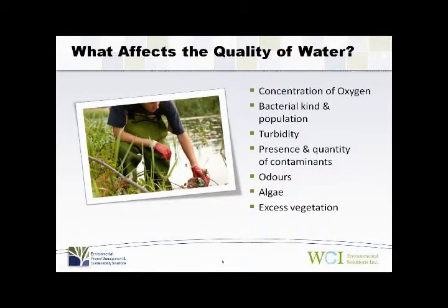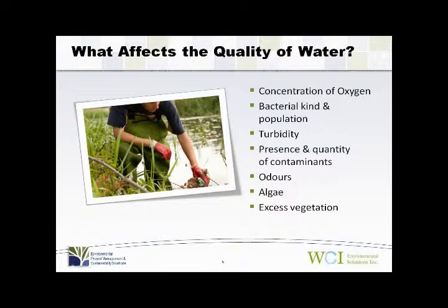What are the parameters that affect the quality of water? Water quality is described as the condition of the water, including its chemical, physical, and biological characteristics, usually with respect to its suitability for a particular purpose such as drinking or swimming. The quality of water is measured by a range of factors. One of the most important is the concentration of oxygen. The amount of oxygen present in a given body of water is very important in understanding how healthy or unhealthy that water is.